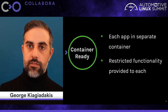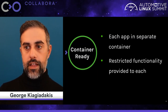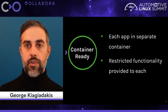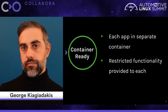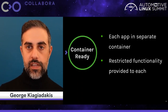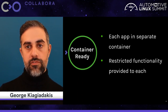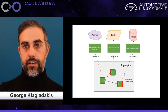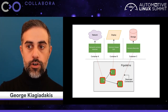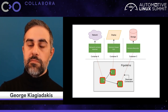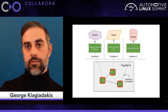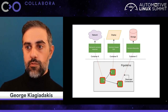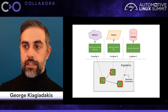PipeWire is container ready. These three applications can run in different containers and we can restrict the functionality provided to each. Container A runs the network camera receiver with access to the network and PipeWire only — no display, no storage. Container B has the viewer with access to the display and PipeWire, nothing more. Container C has the camera recorder with access only to storage.